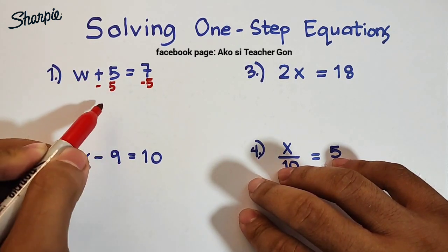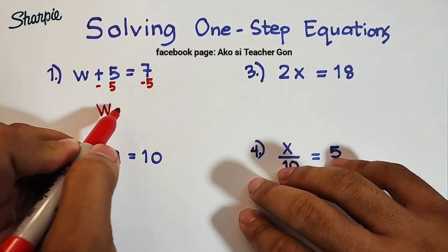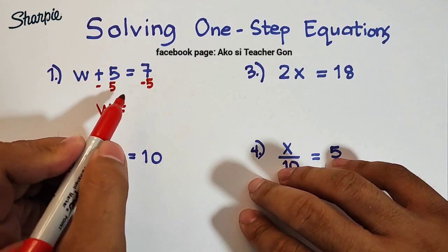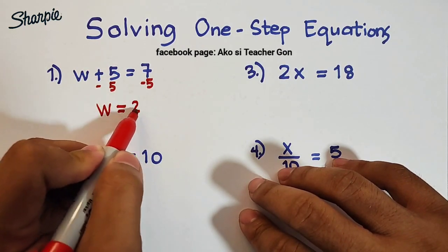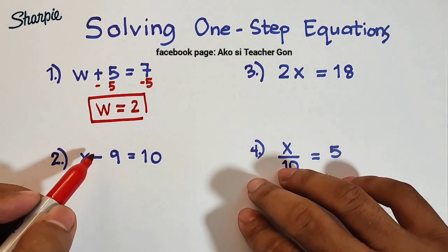As you can see, 5 minus 5 is equal to zero, so what will remain here on the left side of the equation is simply w, then equal to 7 - 5 which is equal to 2. Therefore the solution or the value of this variable w is equal to 2.